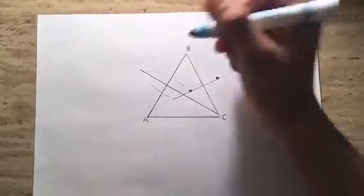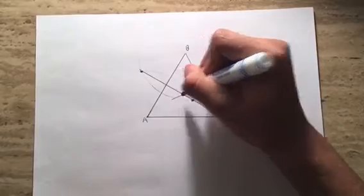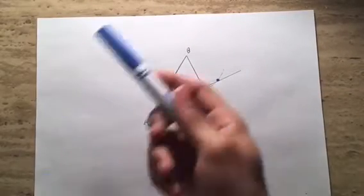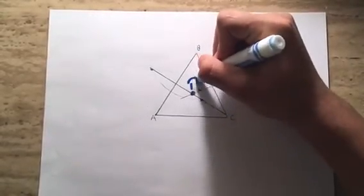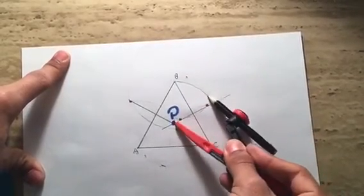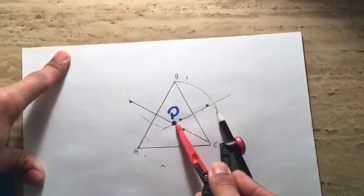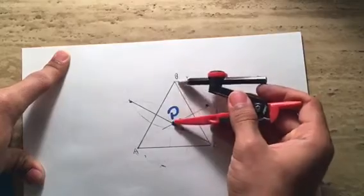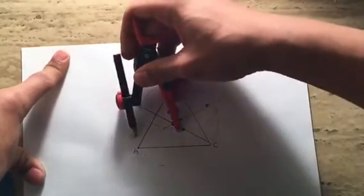Once you do that, label all the intersections and label the points. The most important one is the point of intersection — label that point P, which is the circumcenter. After labeling point P as the circumcenter, construct the circle using point P as the center and PB as the radius. Make sure the circle you're constructing touches all three vertices of your triangle.